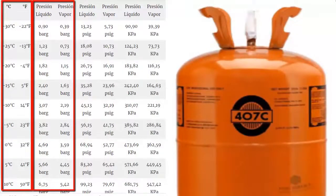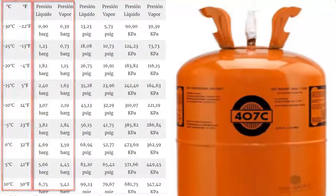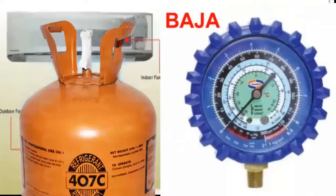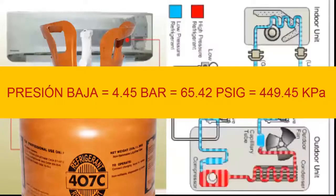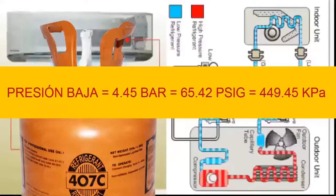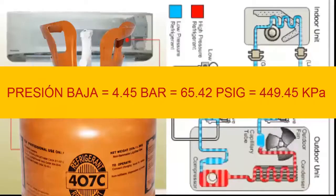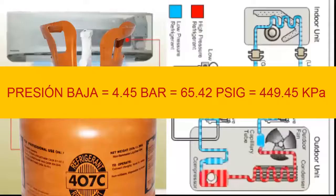Let's look at the most common working pressures, which use vapor pressure as it is the most commonly referenced. To achieve a temperature of 5 degrees Celsius in the evaporator — typical of air conditioning systems, equivalent to 41 degrees Fahrenheit — a low gauge pressure of 4.45 bars is needed, equivalent to 65.42 psi or 449.45 kilopascals.